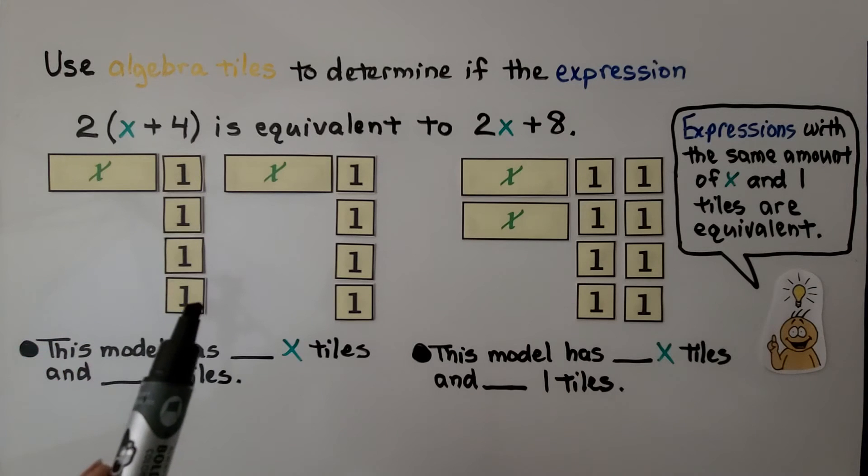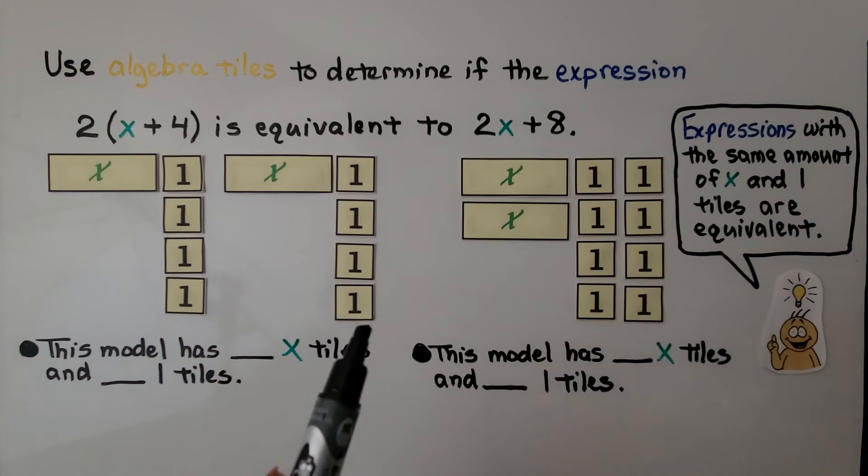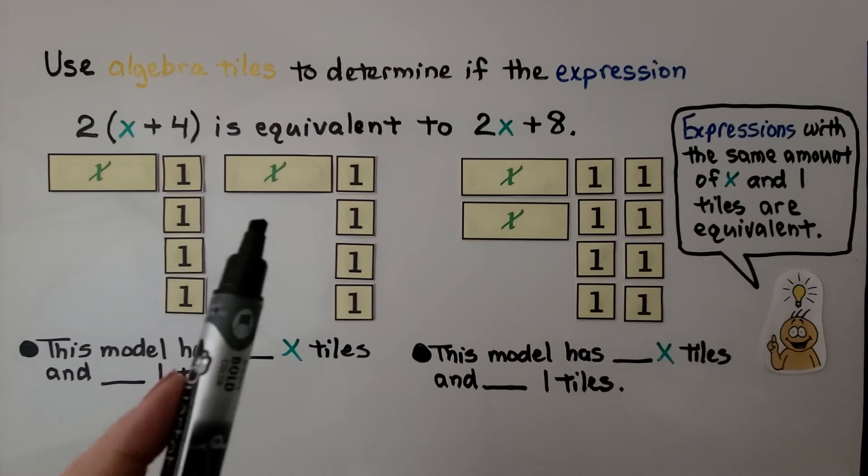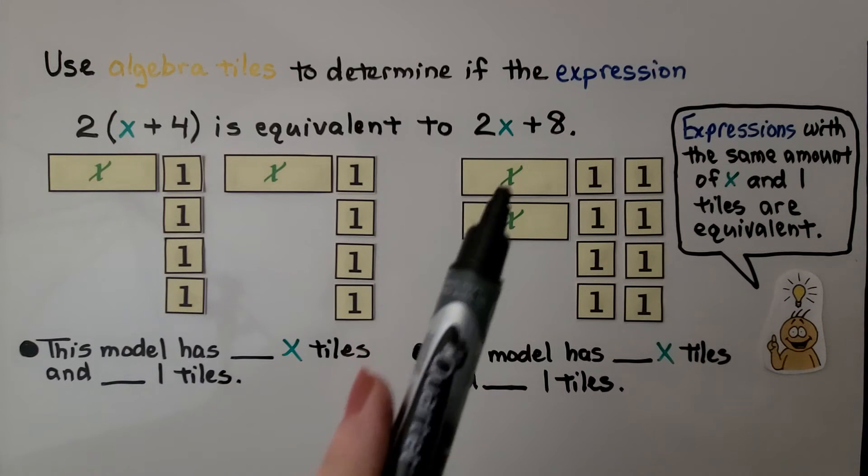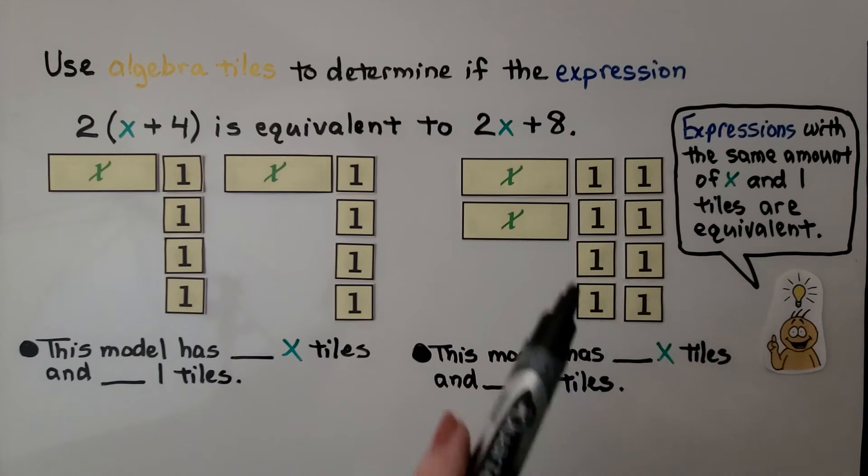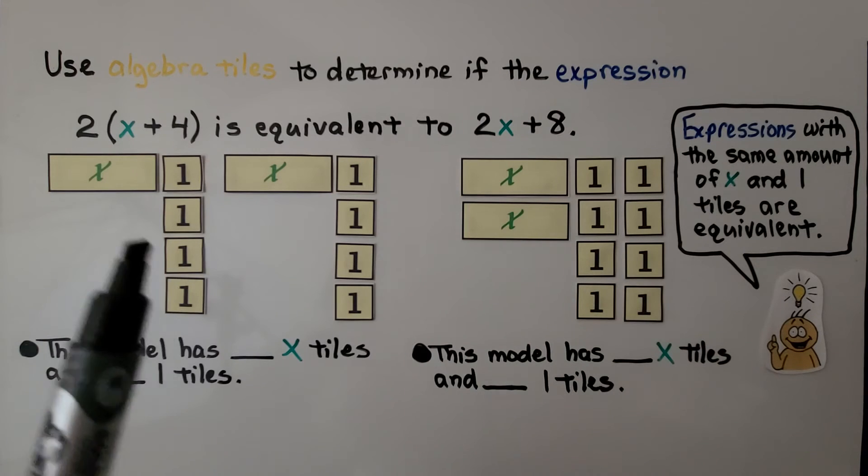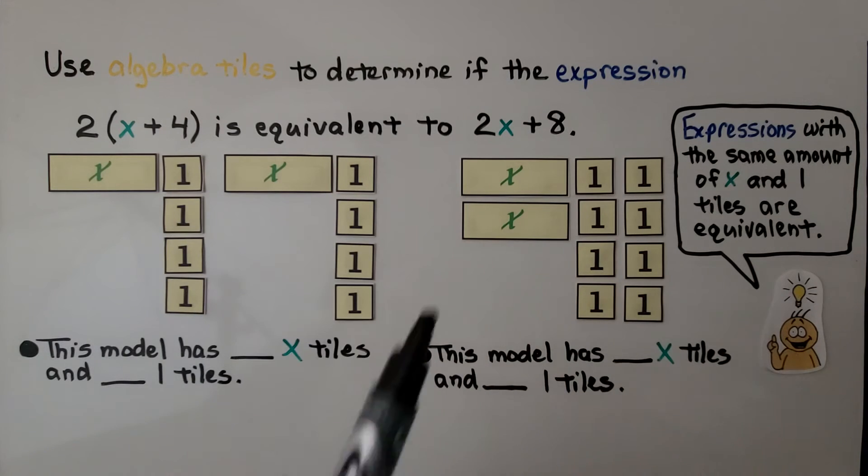We have x plus four and x plus four. We did it two times. If we look at our tiles, we have two x's and eight ones. That's the same thing as two x's and eight ones.